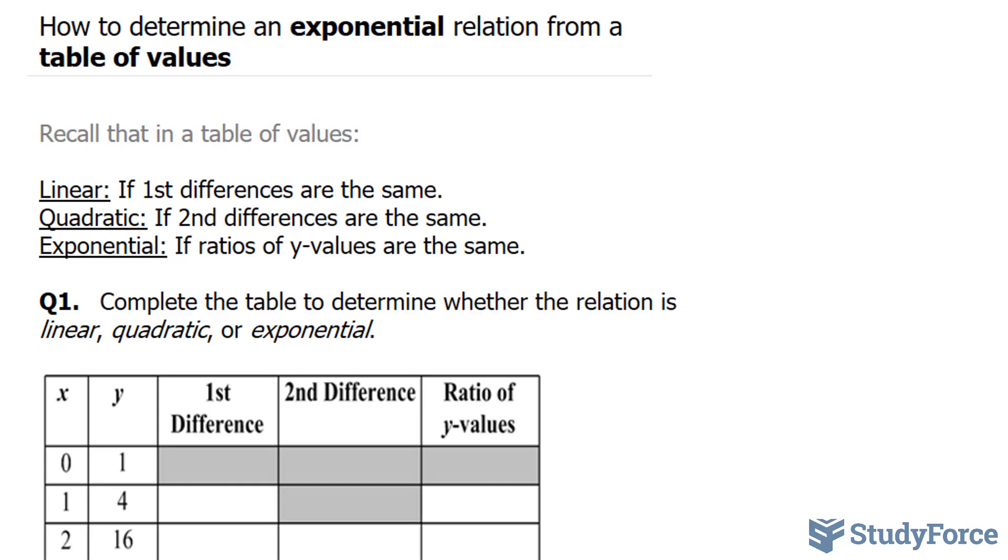Recall that in a table of values, it is linear when the first differences are the same. When the second differences are the same, it's a quadratic relation. And if the ratios of y values are the same, it is referred to as an exponential relation.